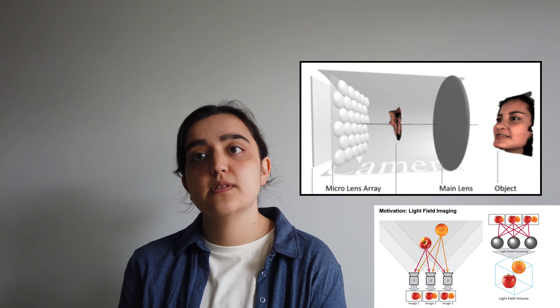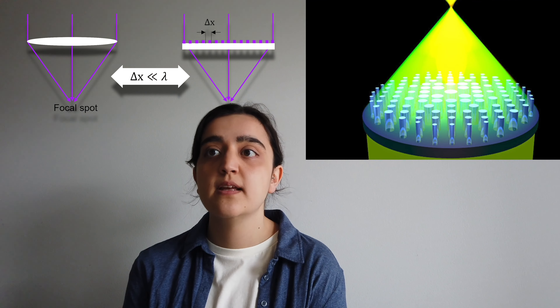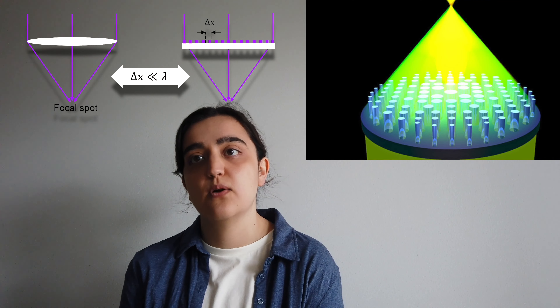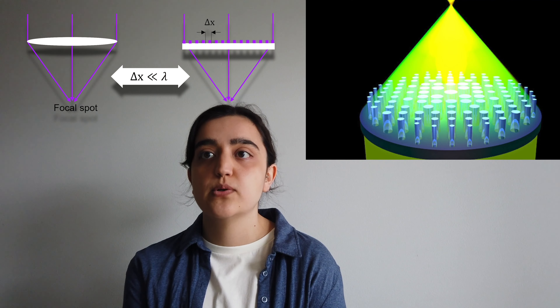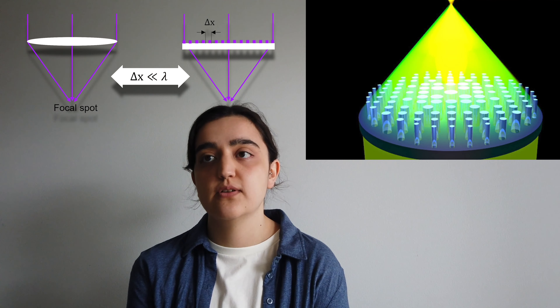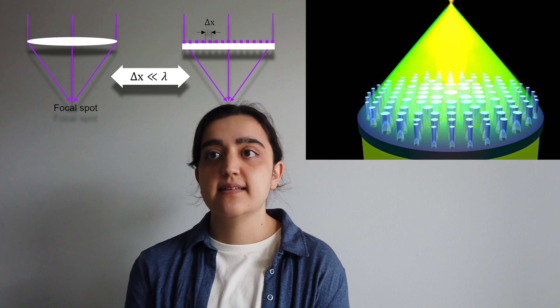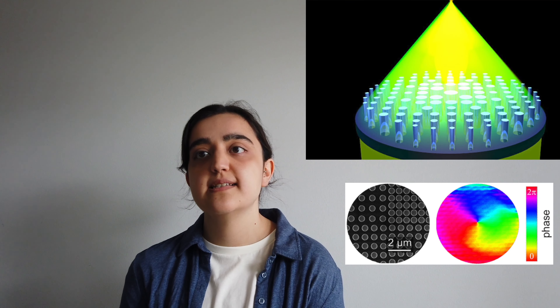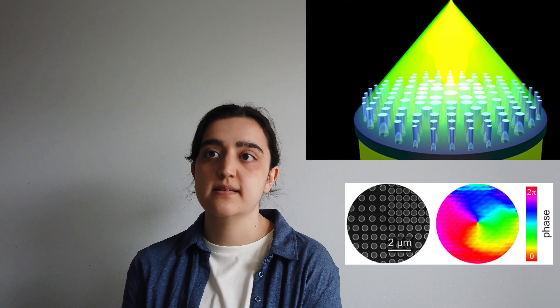With that, it is possible to detect depth, color, and orientation information from the target scene. In my research, I will use metasurfaces instead of these microlens arrays. Metasurfaces are ultra-thin planar optical components that are composed of arrays of sub-wavelength nanostructures. These sub-wavelength nanostructures can modulate amplitude, phase, and polarization of the incident light.